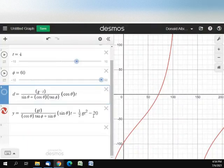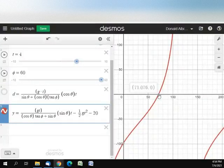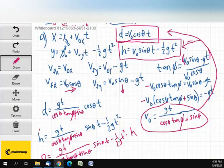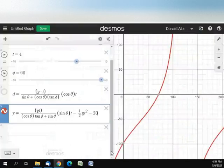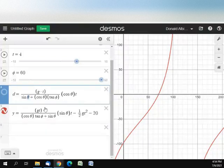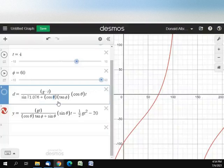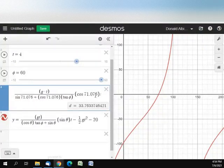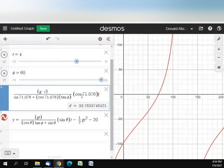So D is going to be this. But theta, we found out, was 71.076 degrees. So I can type that in here. And I get that D is 33.8 meters.